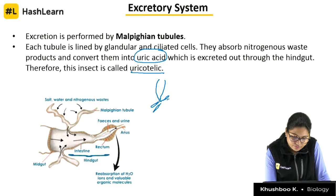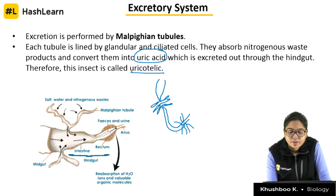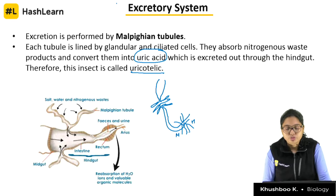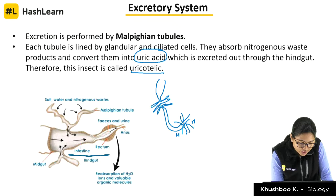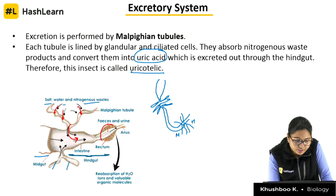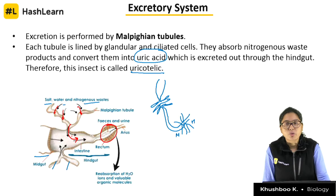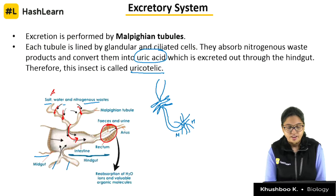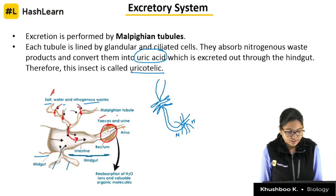In the digestive diagram of cockroach, at two places we draw fine hair-like structures at the junction of midgut and hindgut — those are the Malpighian tubules. They are tubular structures that absorb salt, water, and nitrogenous waste from the haemolymph and pour them into the intestine. The rectum plays a role of reabsorption of water and salt. Feces and urine are removed together.